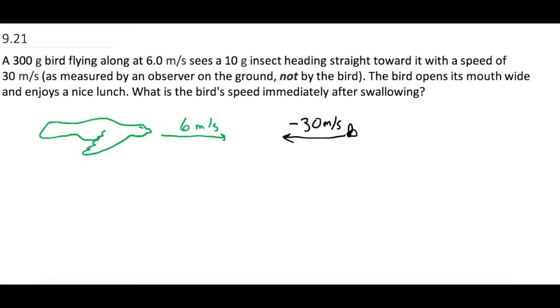All right, so now let's go ahead and list everything. We have the mass of the bird which is 300 grams or 0.3 kilograms and the initial velocity of the bird is 6 meters per second and the final velocity is what we're looking for.